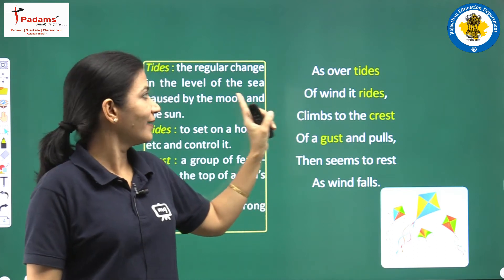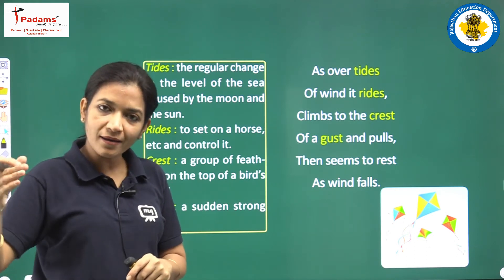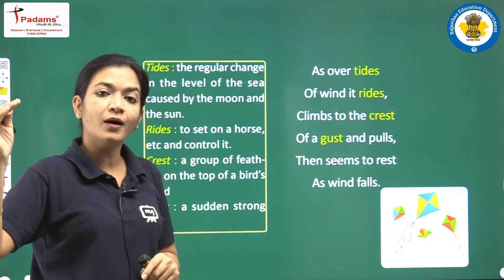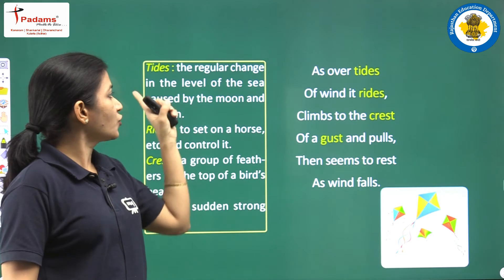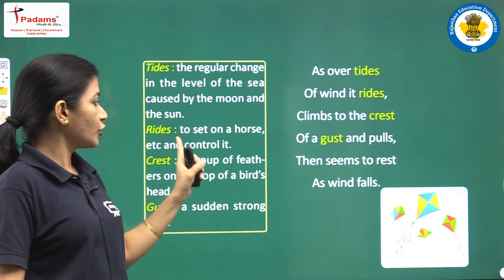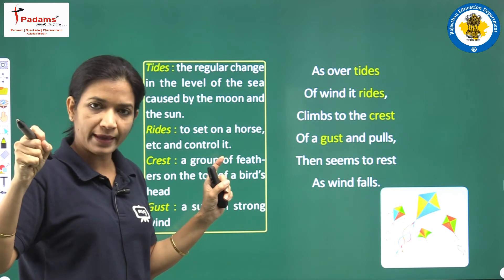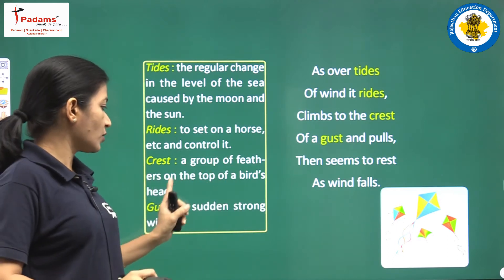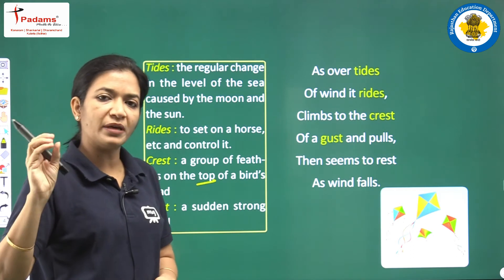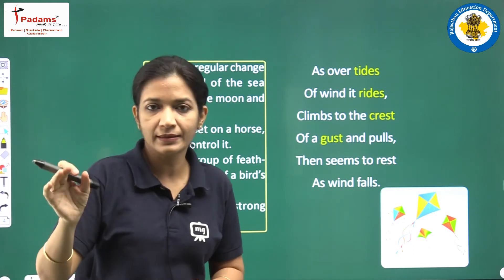Now we will start with the words for the second part. Tides — in Hindi, Jwar Bhata — the regular change in the level of the sea caused by the moon and sun; this is caused by gravity. Rides — to sit on a horse and control it; you ride a bike or a horse. Crest — a group of feathers on the top of a bird's head, but here we use crest to mean 'top.' Gust — a sudden strong wind; a powerful burst of wind is called a gust.